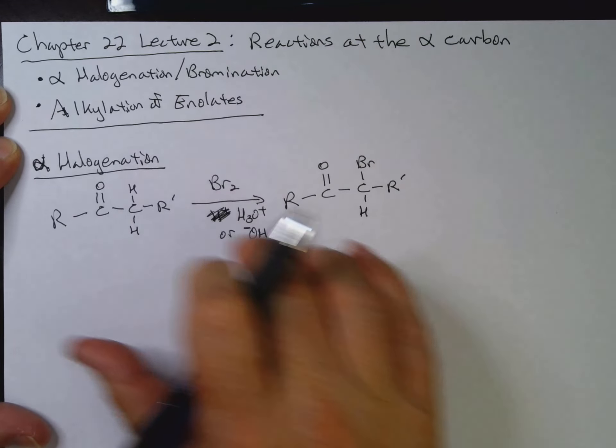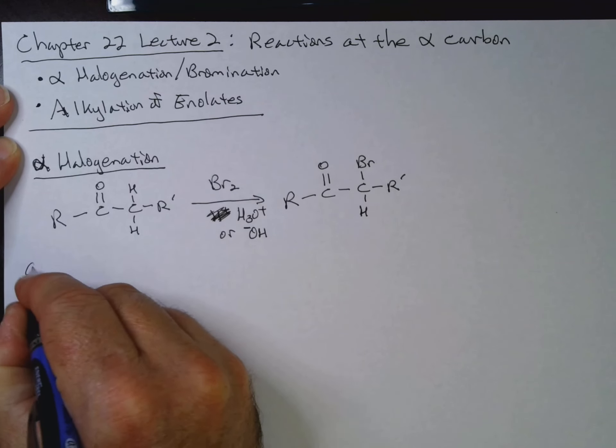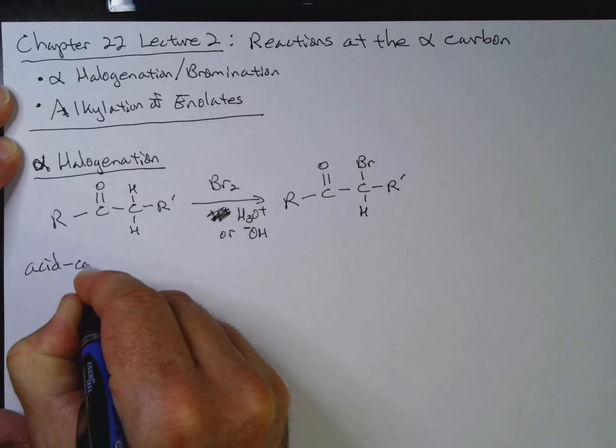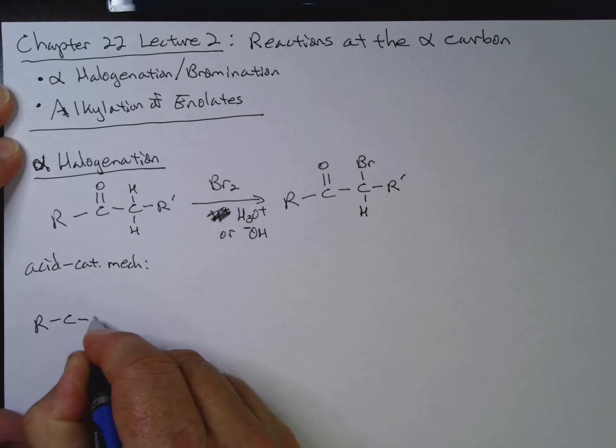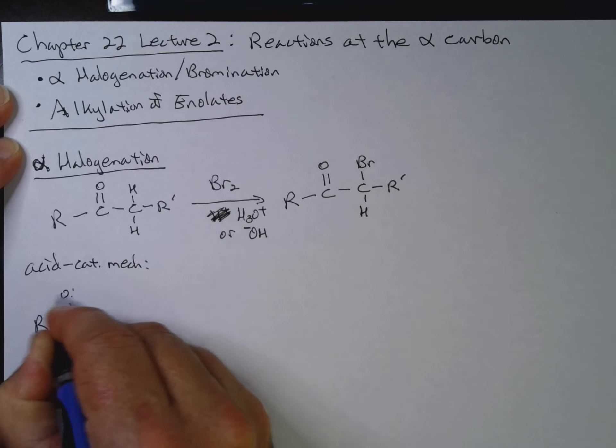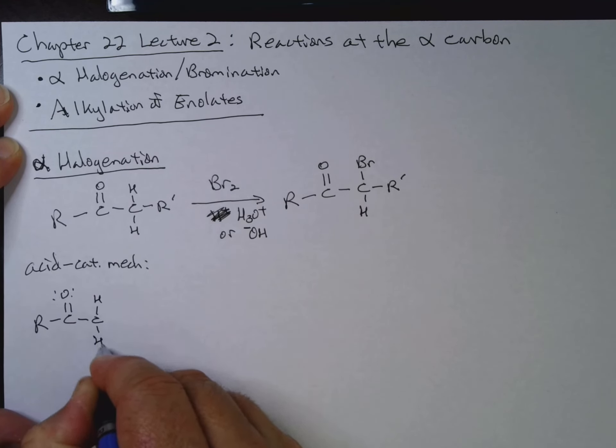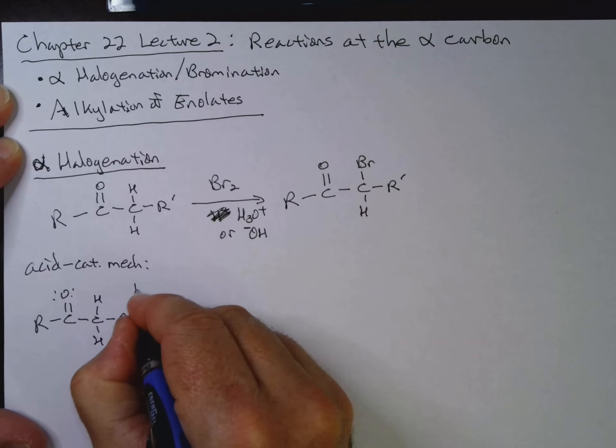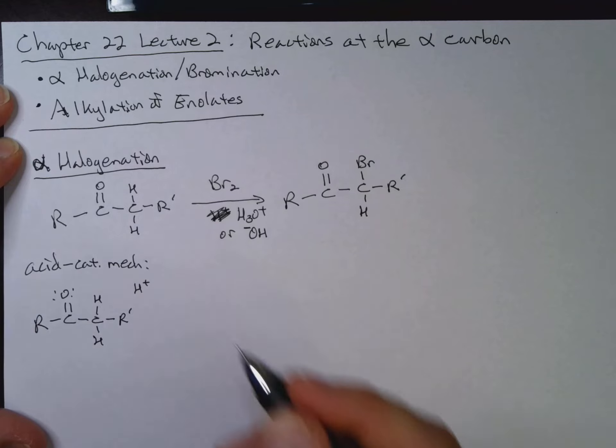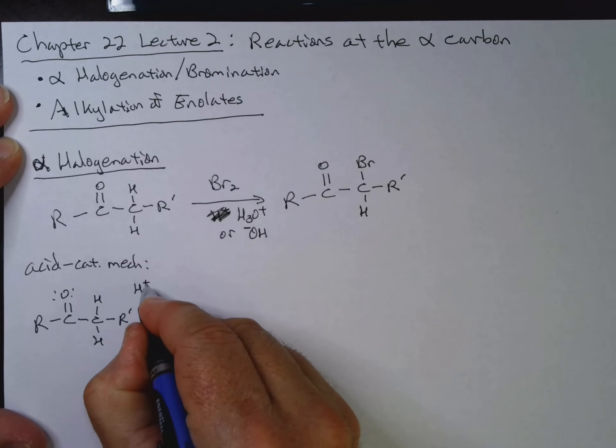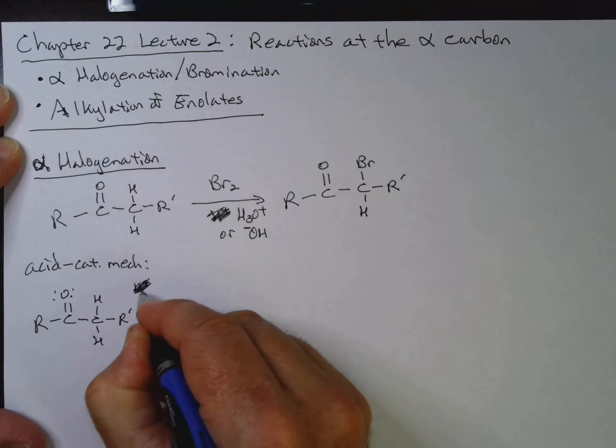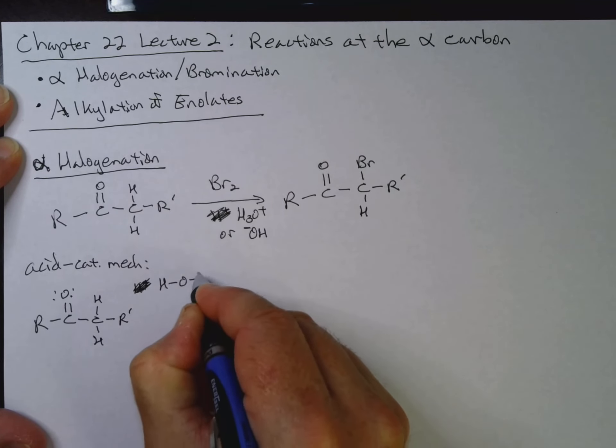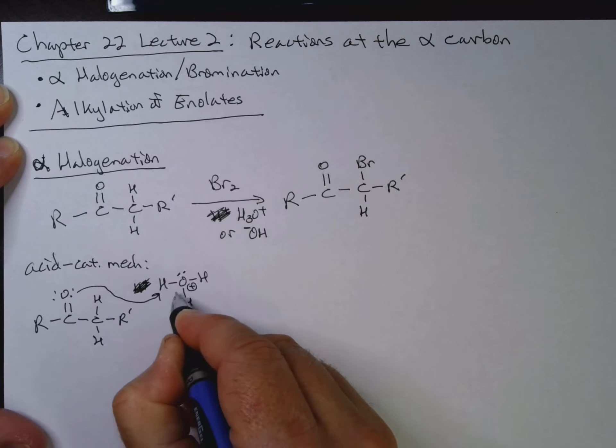And I also go over the base catalyzed mechanism. So we would have, the key here is actually, the first step is formation of the enolate. So I'm going to have my acid. I'm just going to call it H+ in this case. You could do H3O+. Yeah, why don't I do H3O+? H, O, H, H, lone pair, positive charge. Let's go ahead and protonate that.